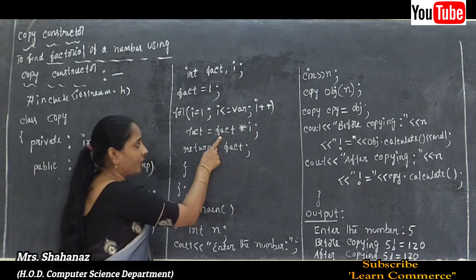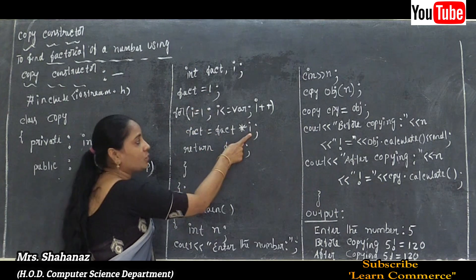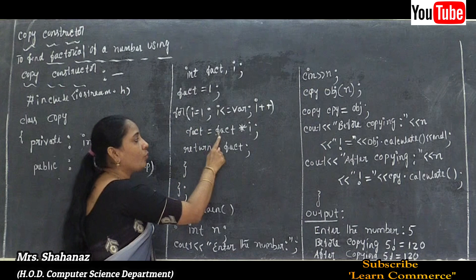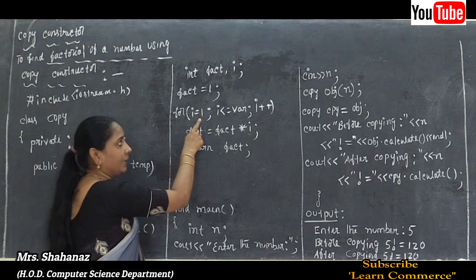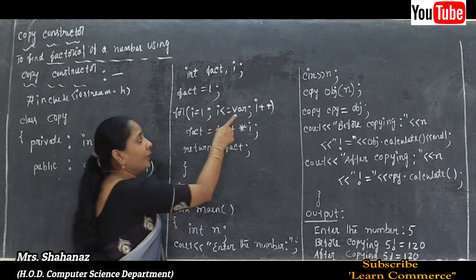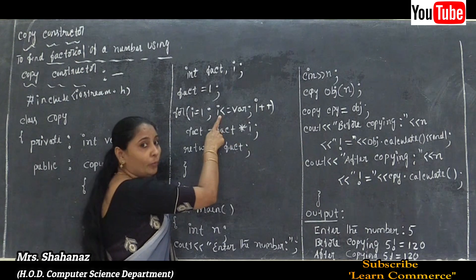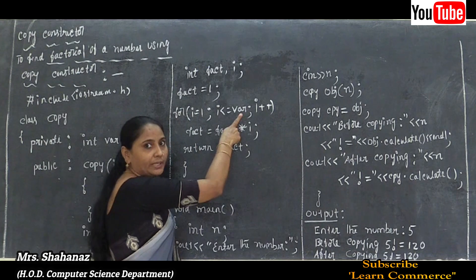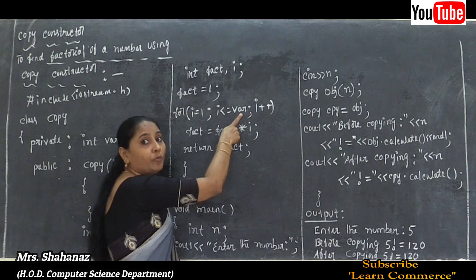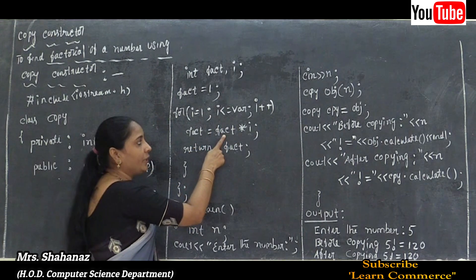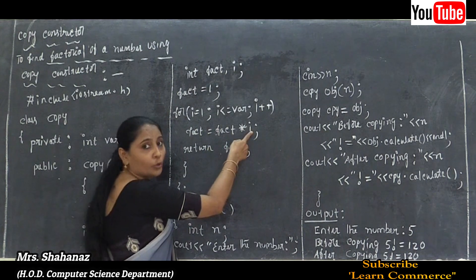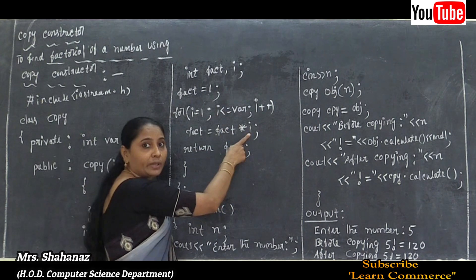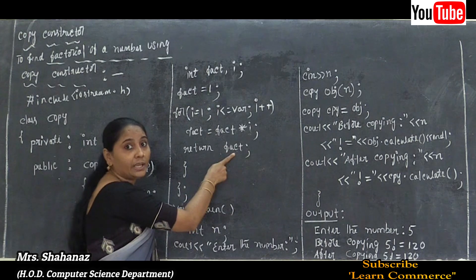Inside the loop: fact = fact * i. Initially fact = 1. First iteration: i = 1, so fact = 1 * 1 = 1. Second iteration: i = 2, condition 2 <= 5 is true, so fact = 1 * 2 = 2. The loop continues incrementing i and updating fact until the condition is no longer satisfied.